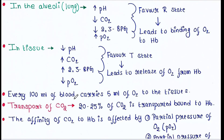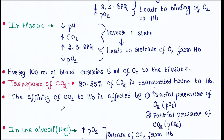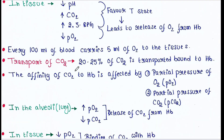Every 100 ml of blood carries 5 ml of oxygen to the tissues. Next, the transport of CO2: 20 to 25 percent of CO2 is transported bound to hemoglobin. The affinity of CO2 to hemoglobin is affected by the partial pressure of oxygen and the partial pressure of CO2.